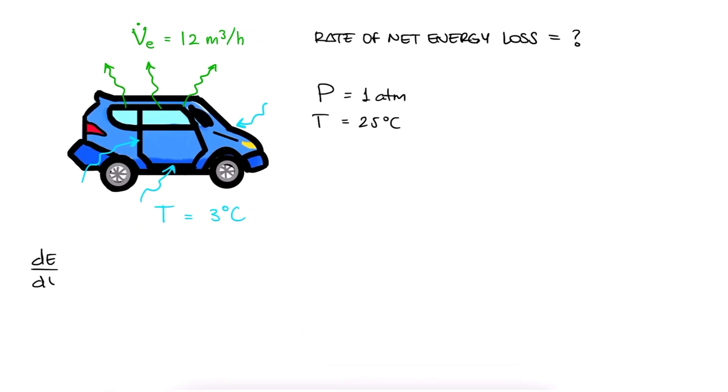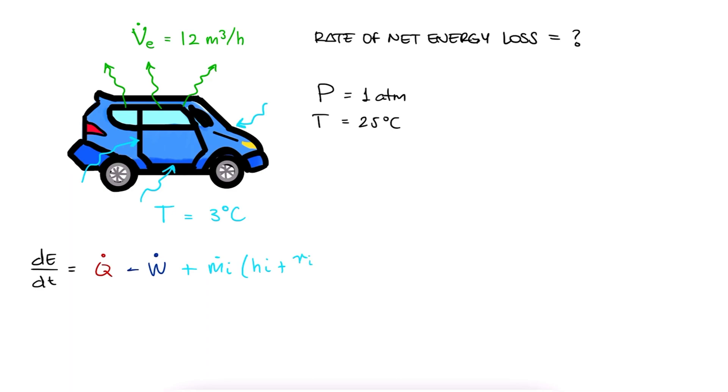From what was established in the main lecture video, the change in energy over time DEDT is determined by this expression. There is no system heat, no system work, and the changes in kinetic energy and potential energy are most likely negligible, like it was shown in the example of the main lecture video. Therefore, the change that we're looking for is just the mass flow rate coming in times the specific enthalpy at the inlet, minus the mass flow rate coming out times the specific enthalpy at the exit.